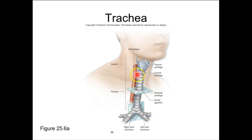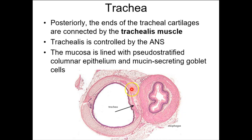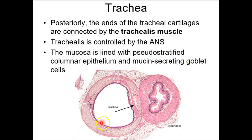The C-shaped cartilaginous rings are incomplete because of the location of the esophagus. They're connected by annular ligaments. There's a smooth muscle on the posterior aspect of the trachea known as the trachealis muscle, controlled by the autonomic nervous system. This is a pseudo-stratified columnar epithelium with mucin-secreting goblet cells.